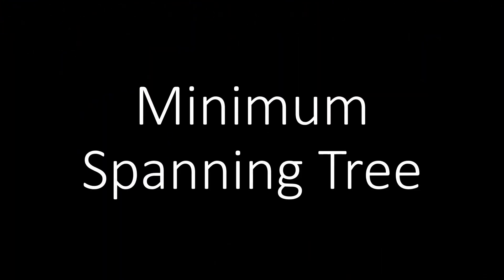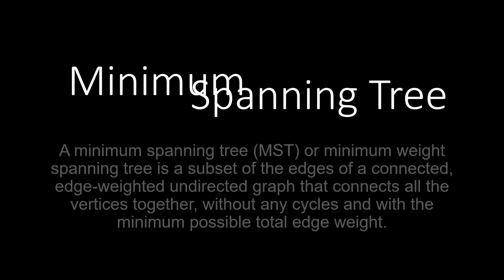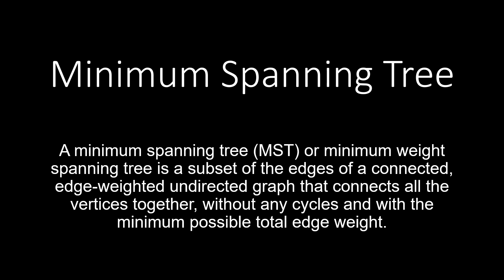Today we will discuss what is a Minimum Spanning Tree and how to find it. The Wikipedia defines a Minimum Spanning Tree or a Minimum Weight Spanning Tree as a subset of the edges of a connected, edge-weighted, undirected graph that connects all the vertices together, without any cycle and with the minimum possible total edge weight.